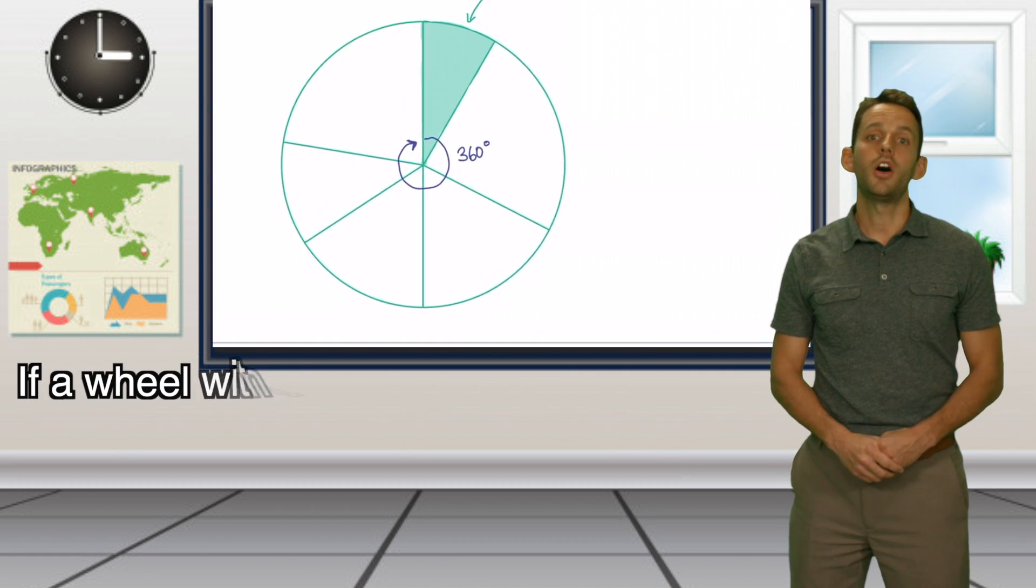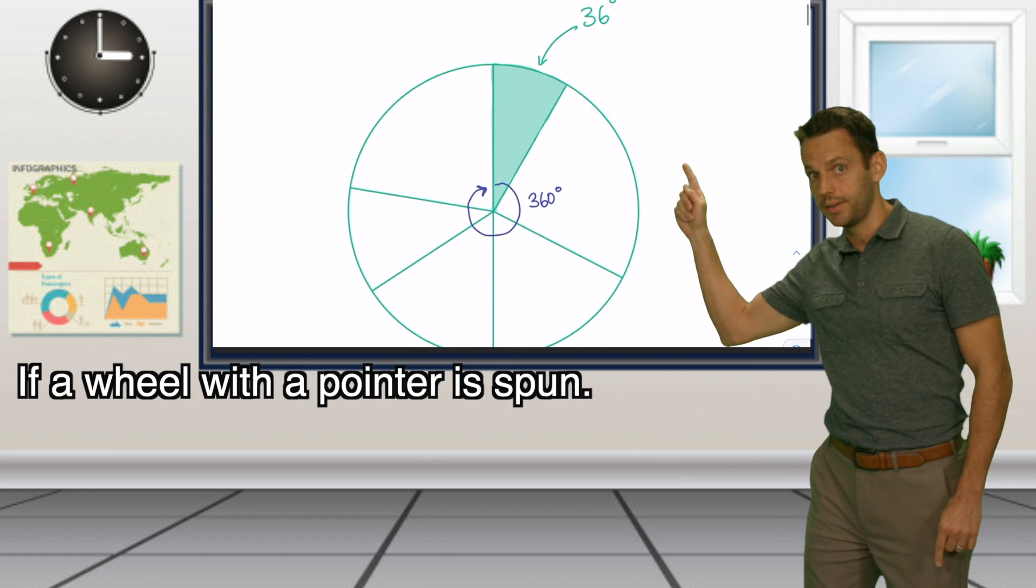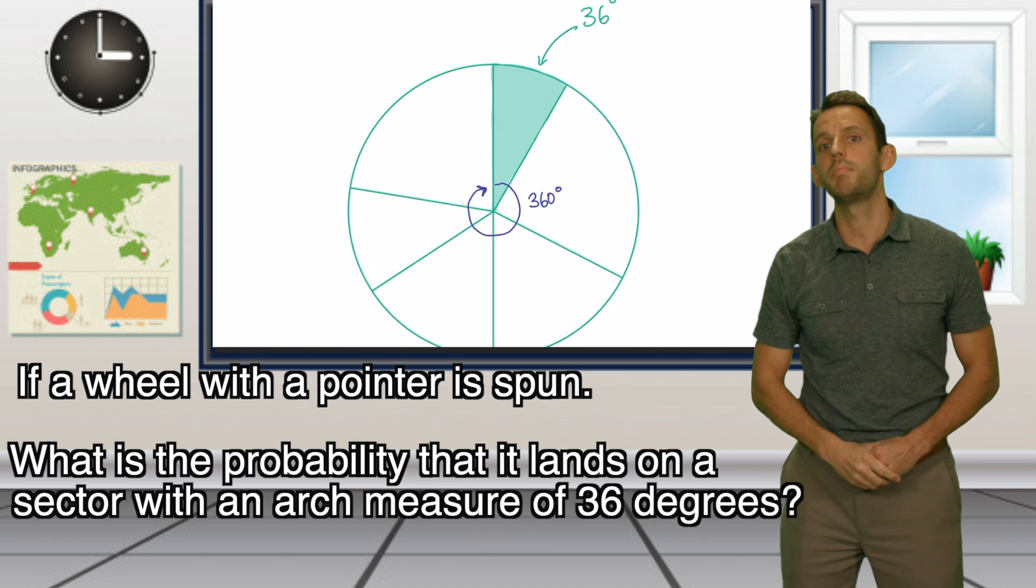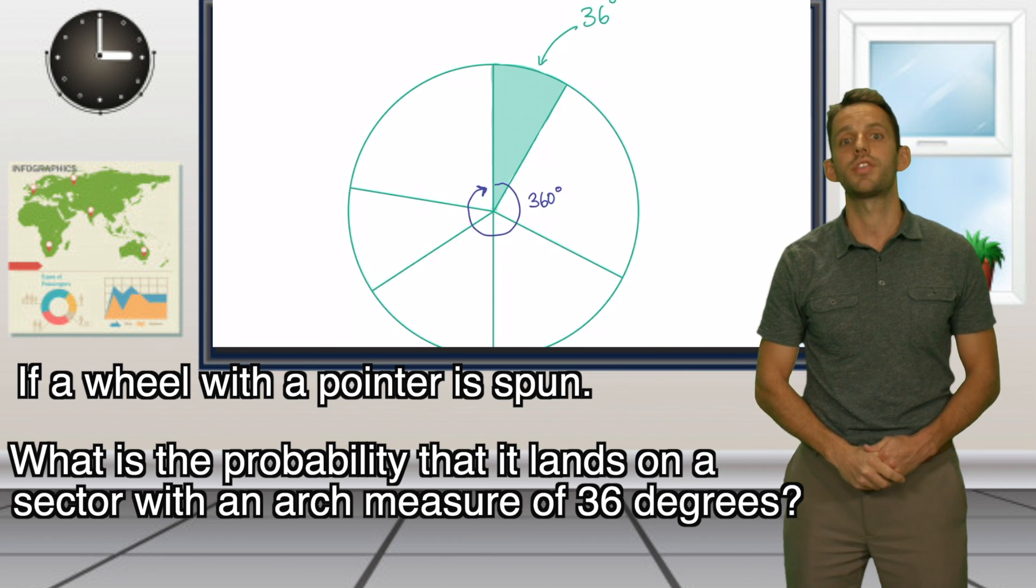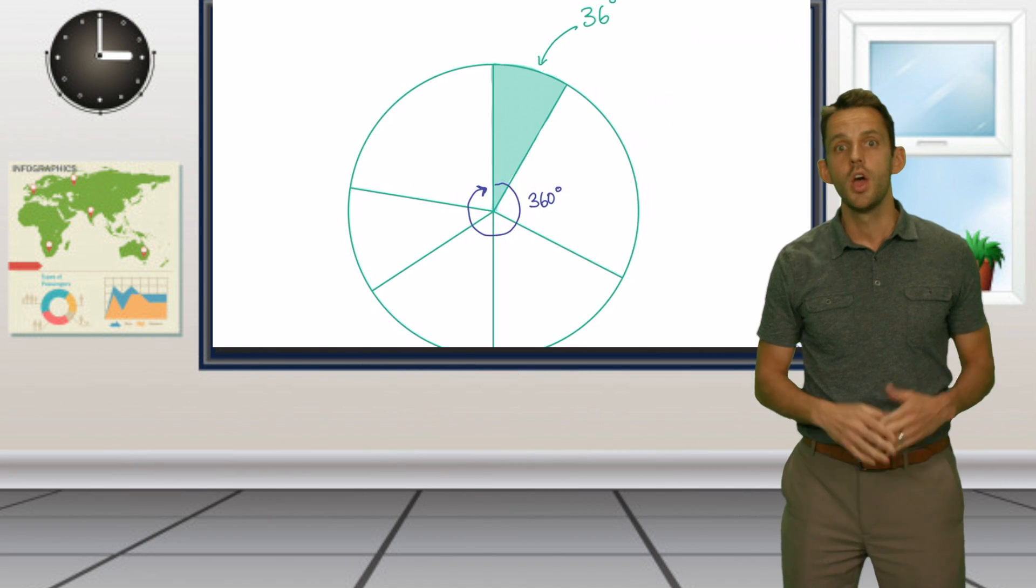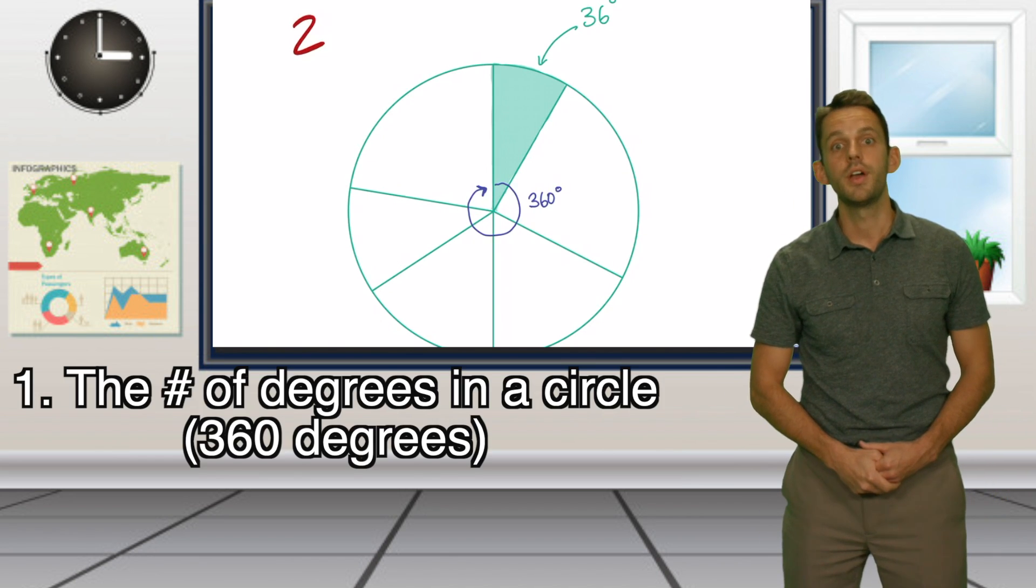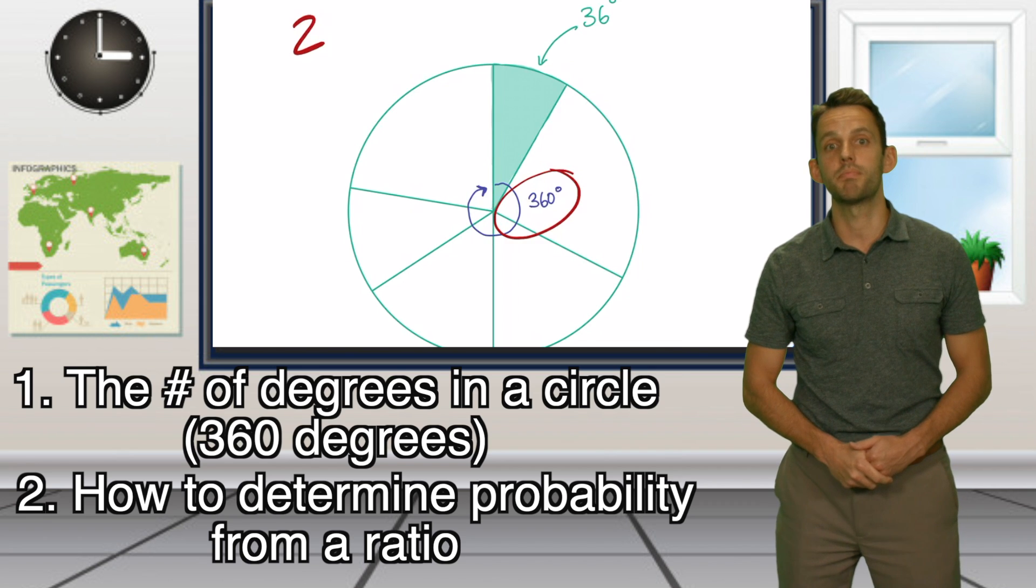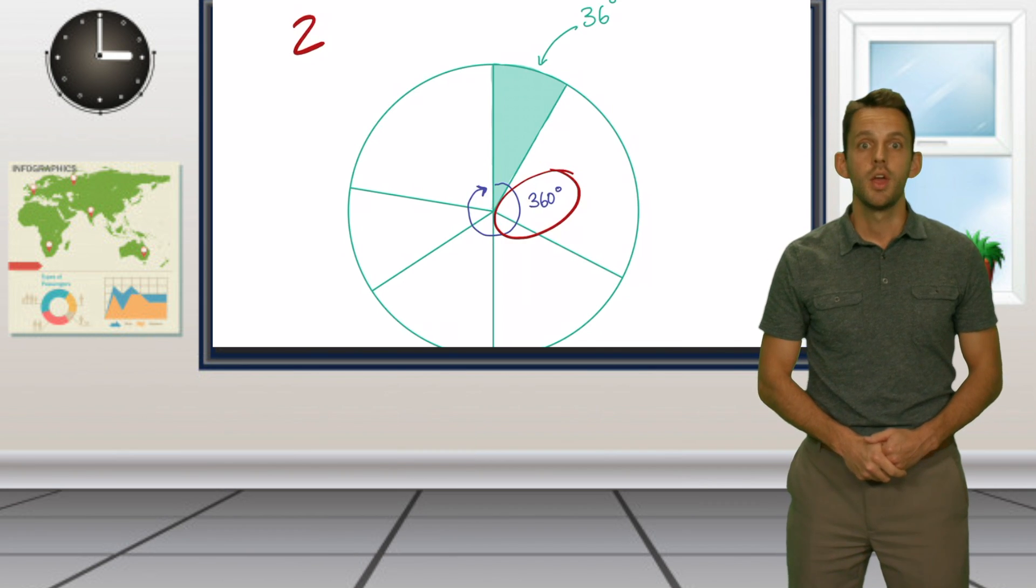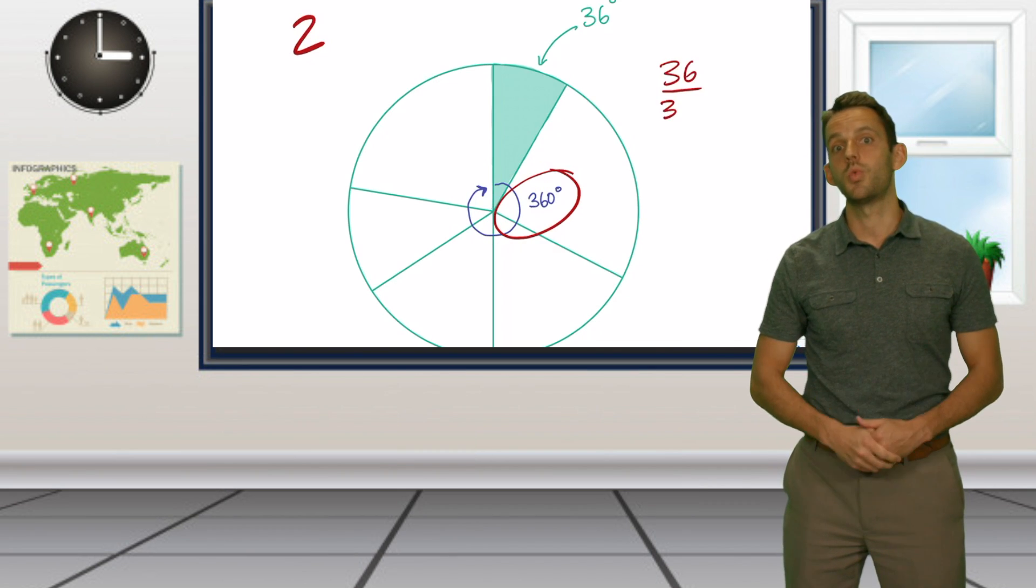For example, if a wheel with a pointer is spun, like this one, what is the probability that it lands on a sector with an arc measure of 36 degrees? For this problem, you have to understand two concepts. The number of degrees in a circle, and then also how to determine probability from a ratio. 36 out of 360, which is one-tenth.